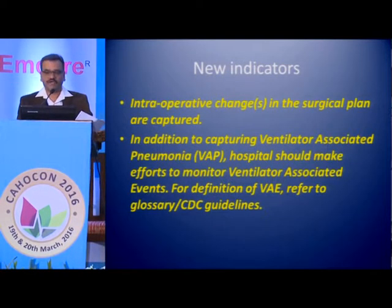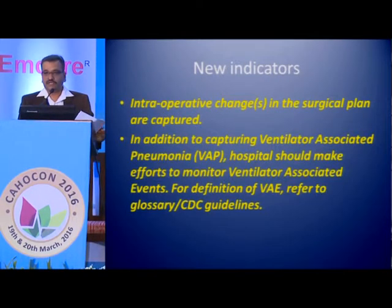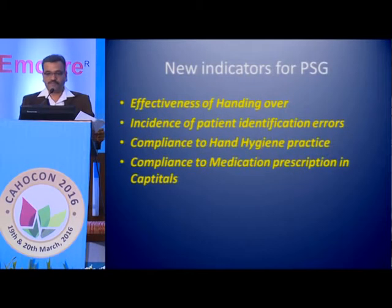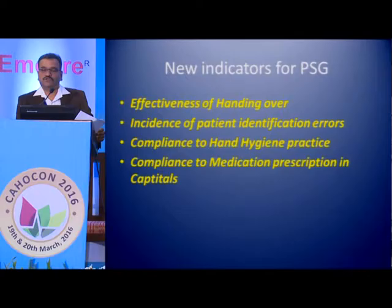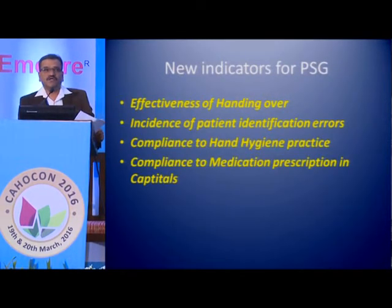There are some new indicators. Intraoperative change in the surgical plan — earlier there was modification of anesthesia plan only. Why only anesthesia? So there is one more indication of change in surgical plan intraoperatively that has to be captured. In addition to VAP, there is VAE — ventilator-associated events — which could be injury to the lungs and other injuries, intubation trauma, stenosis, anything could be captured.